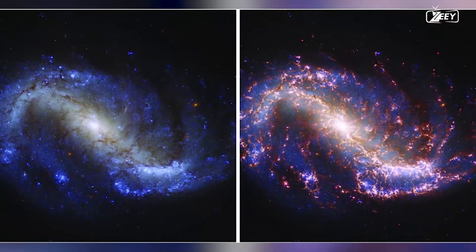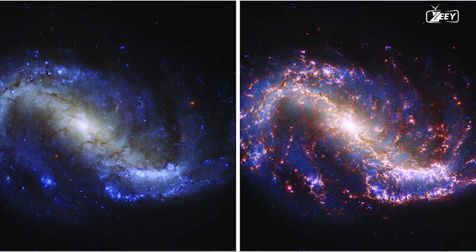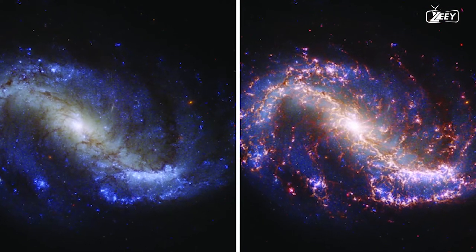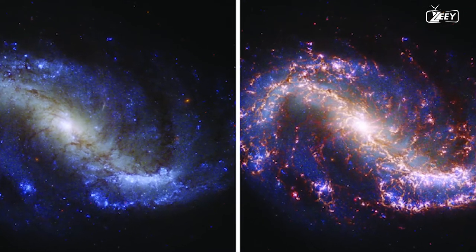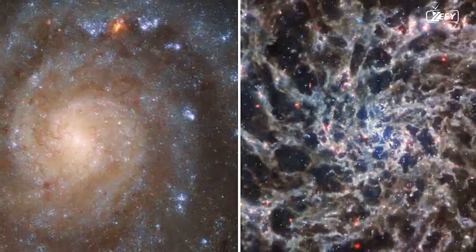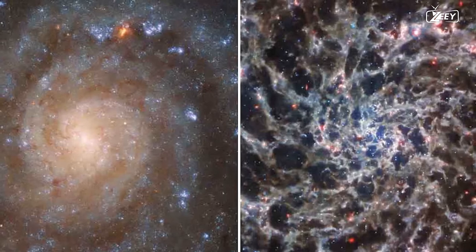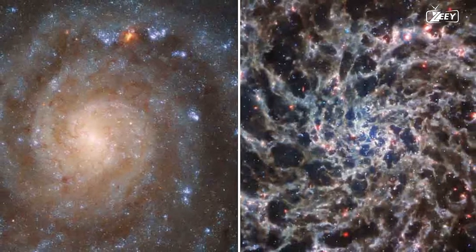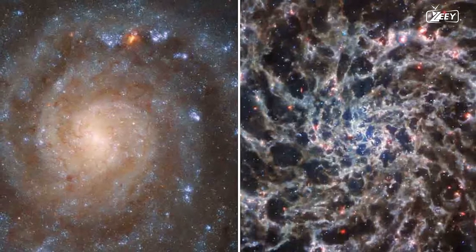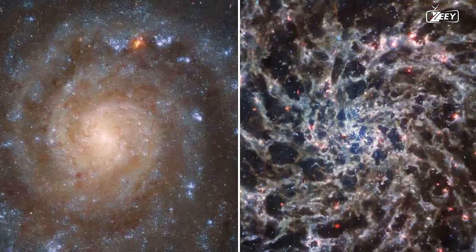A stunning ultraviolet and visible light image of the same galaxy made from data gathered by Hubble's wide-field camera is shown next to this lavishly detailed mid-infrared image. Some significant variations are instantly seen when comparing the two photos. Whereas the Webb image displays a continuous tangle of structures that mimic the geometry of the spiral arms, the Hubble image displays dark areas that appear to divide the spiral arms.